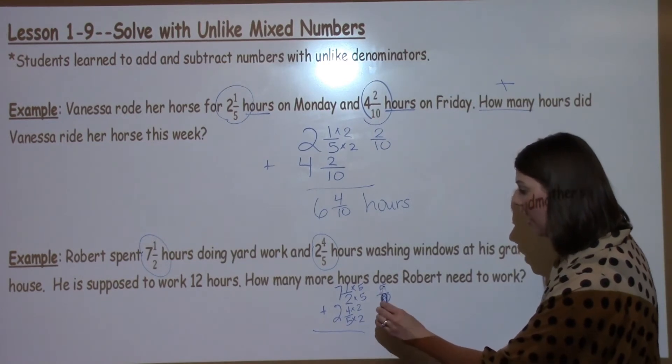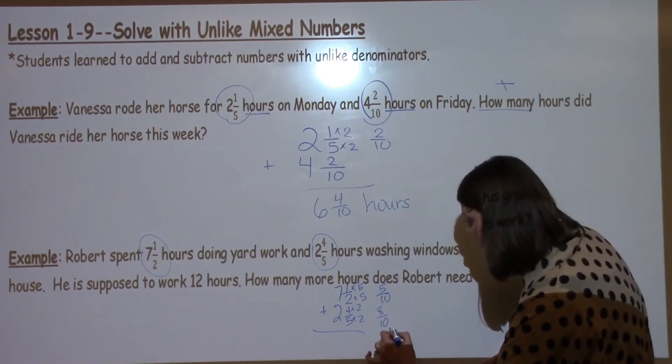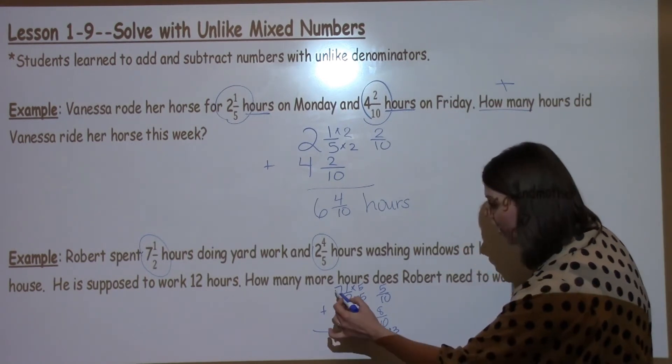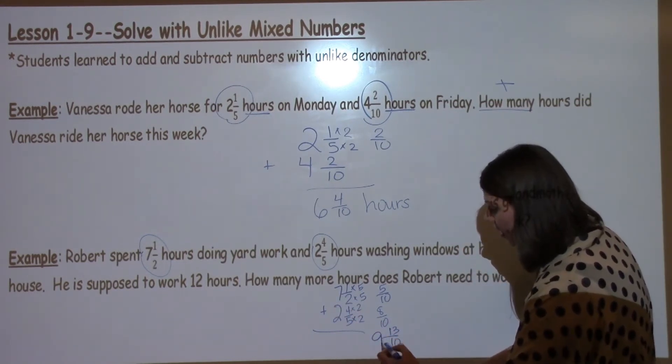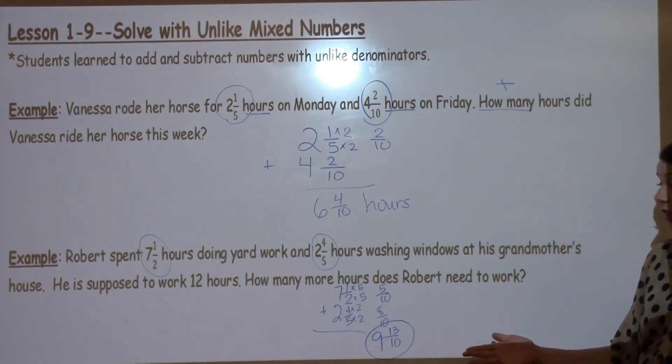When I add these together, I get 5 plus 8 is 13 tenths. I have 7 plus 2, which is 9. As you can see, I've got an improper fraction, which I have to convert to a mixed number.